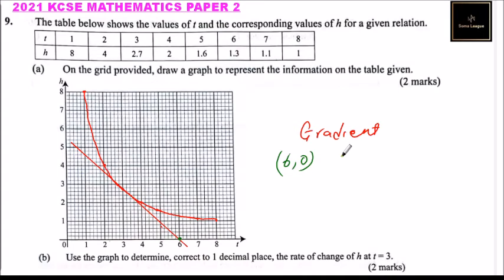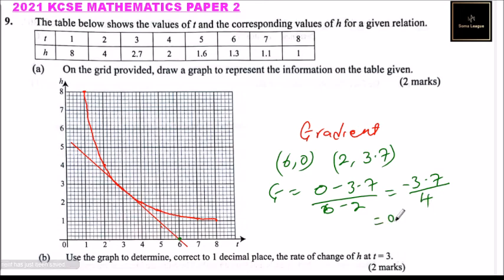So calculate the gradient. Gradient equals 0 minus 3.7 divided by 6 minus 2, which equals minus 3.7 divided by 4, equals minus 0.0925.